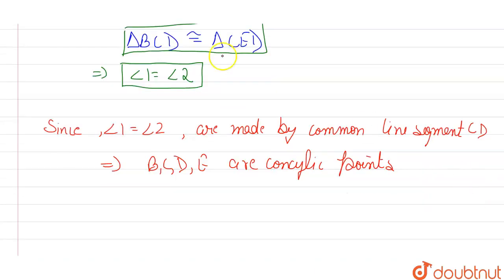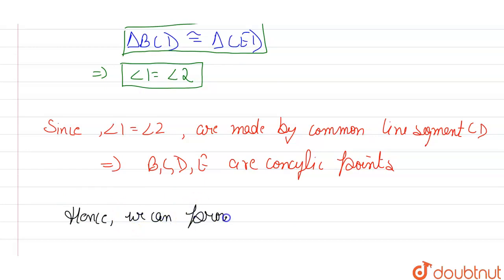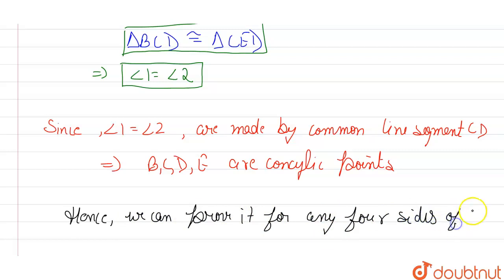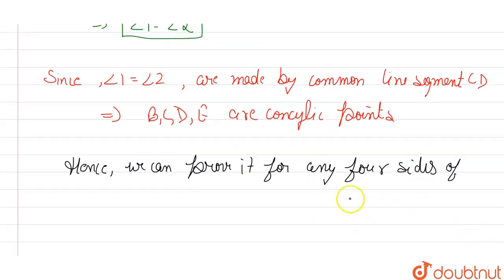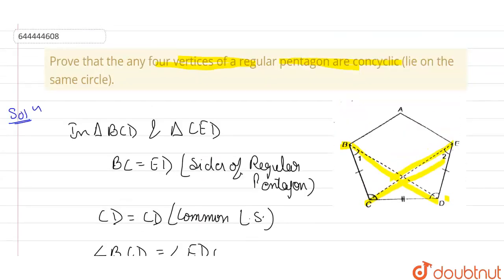Hence, we can prove this for any four vertices of a regular pentagon. This completes the proof — any four vertices of a regular pentagon are concyclic.